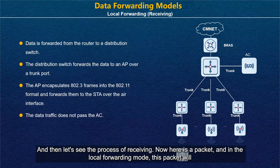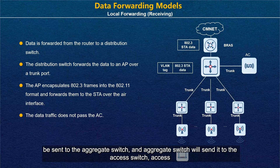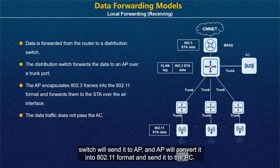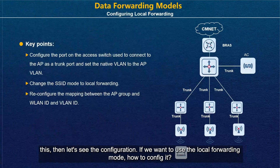For receiving packets in local forwarding mode, a packet from the internet is sent to the aggregate switch, which forwards it to the access switch, which sends it to the AP. The AP converts it into 802.11 format and sends it to the STA.